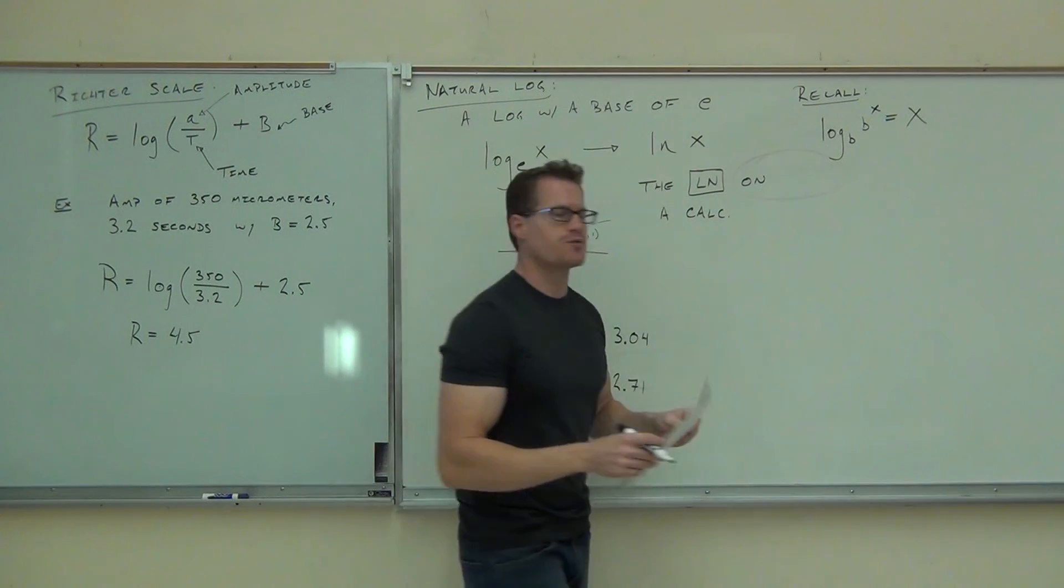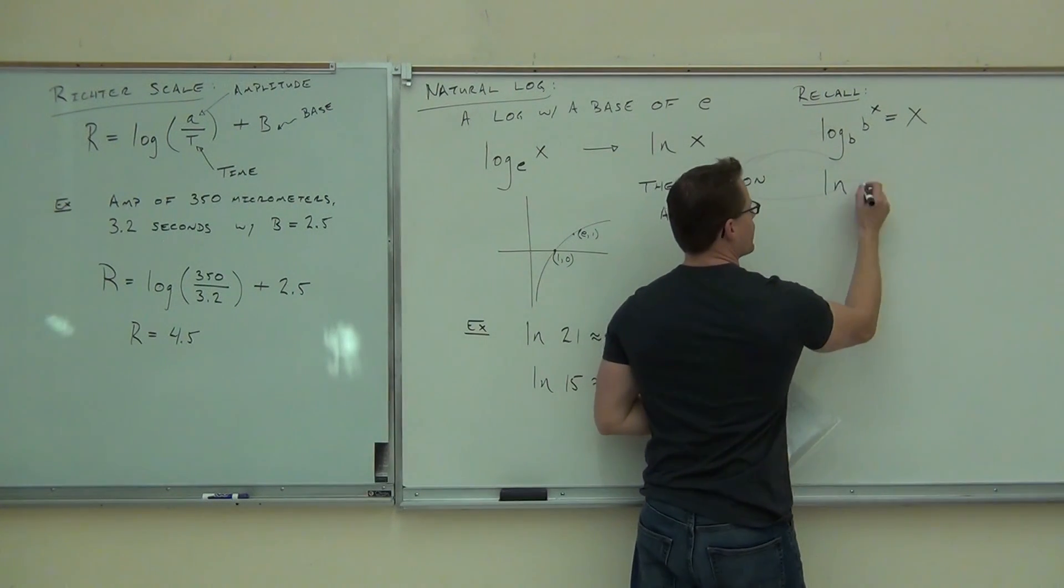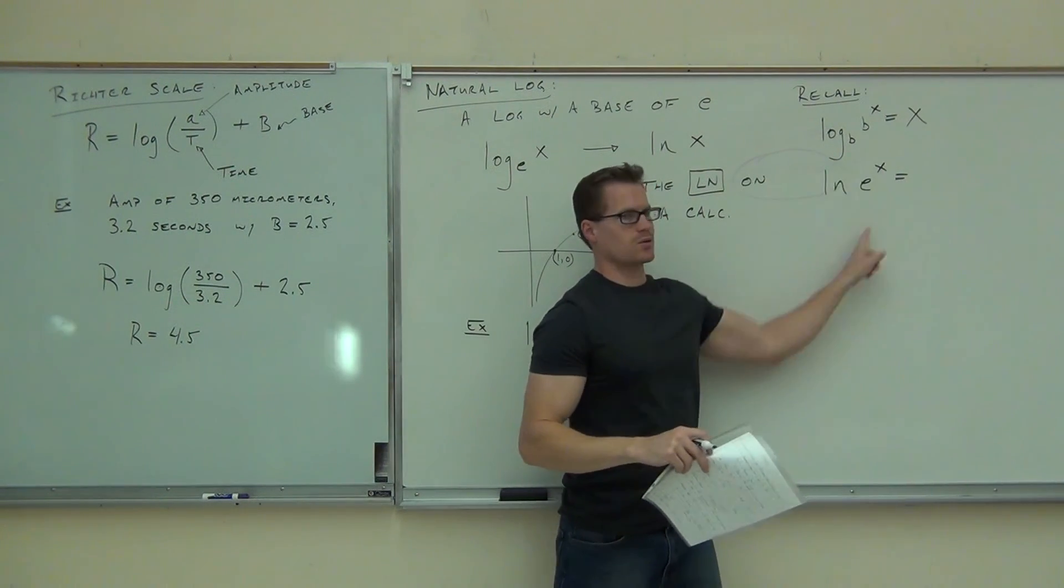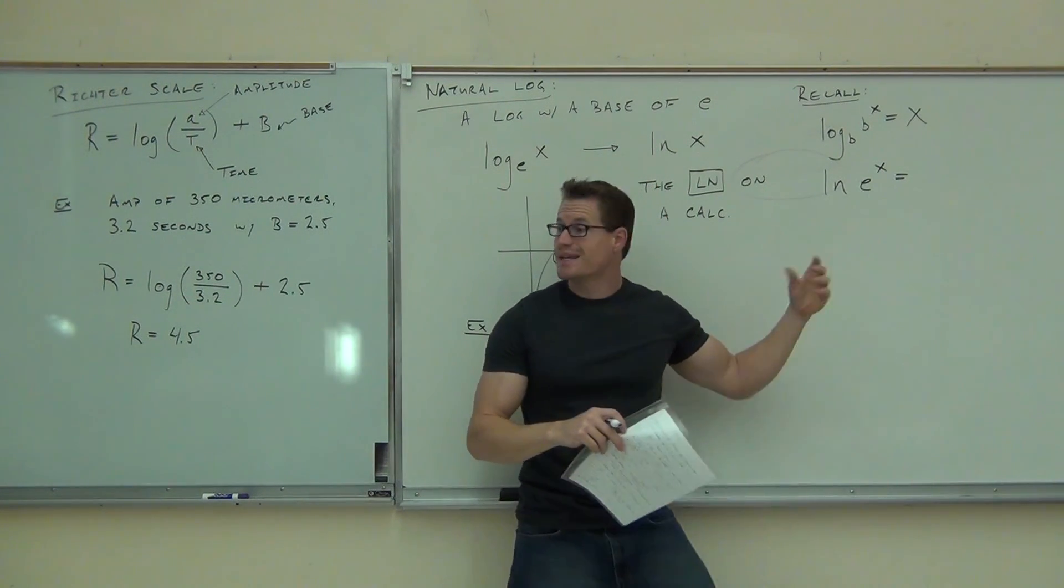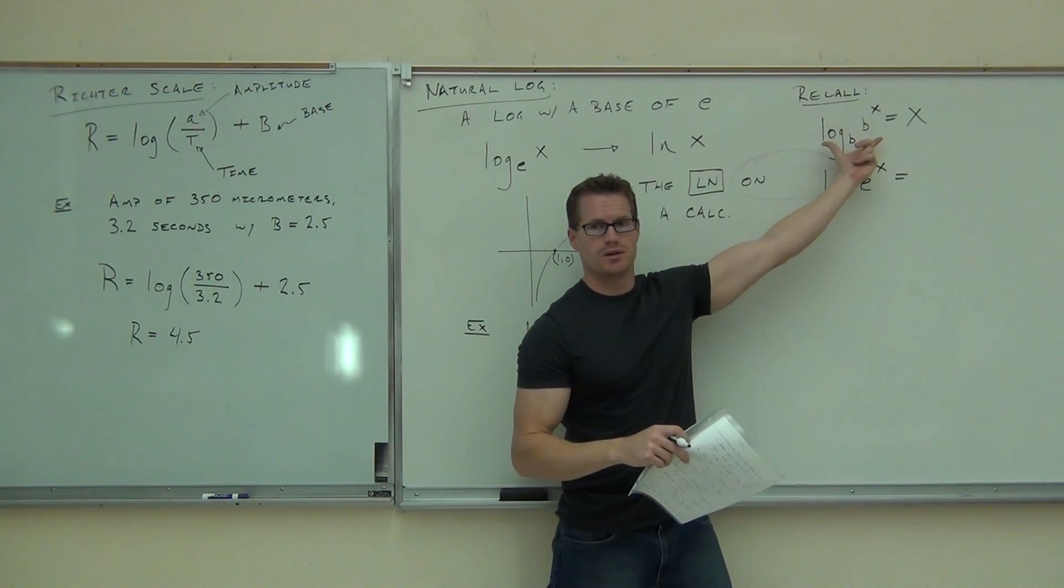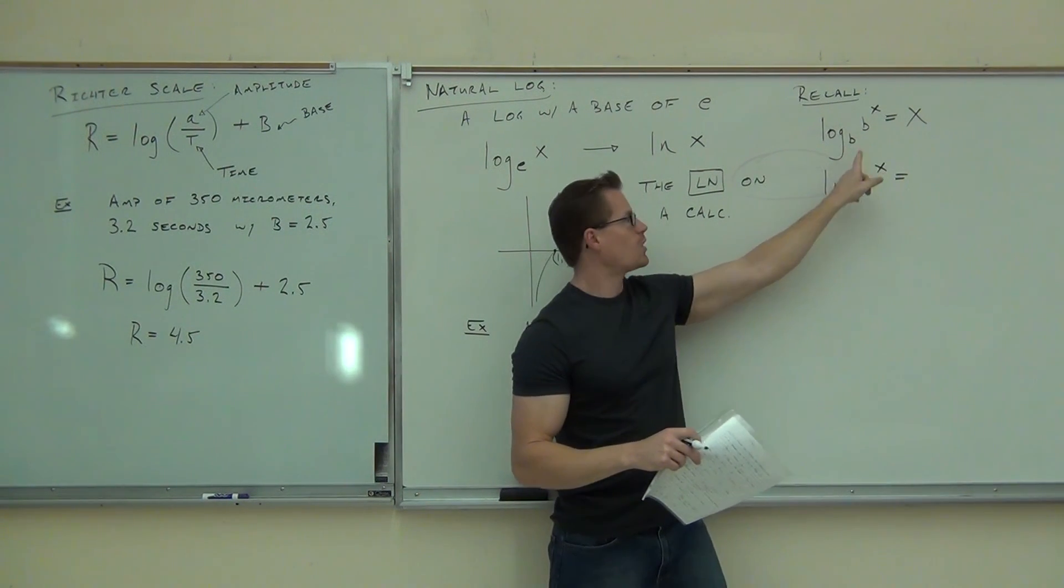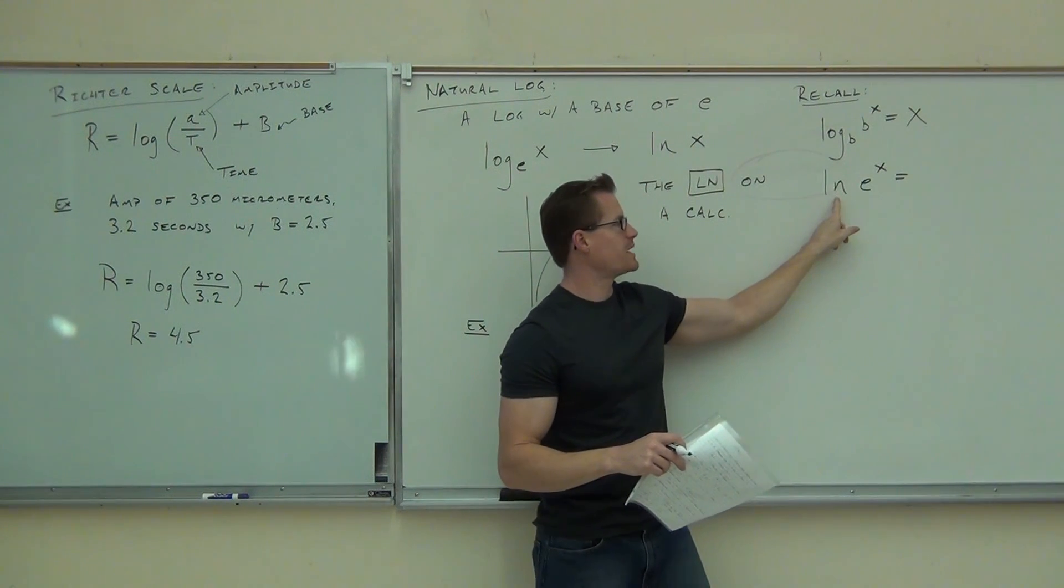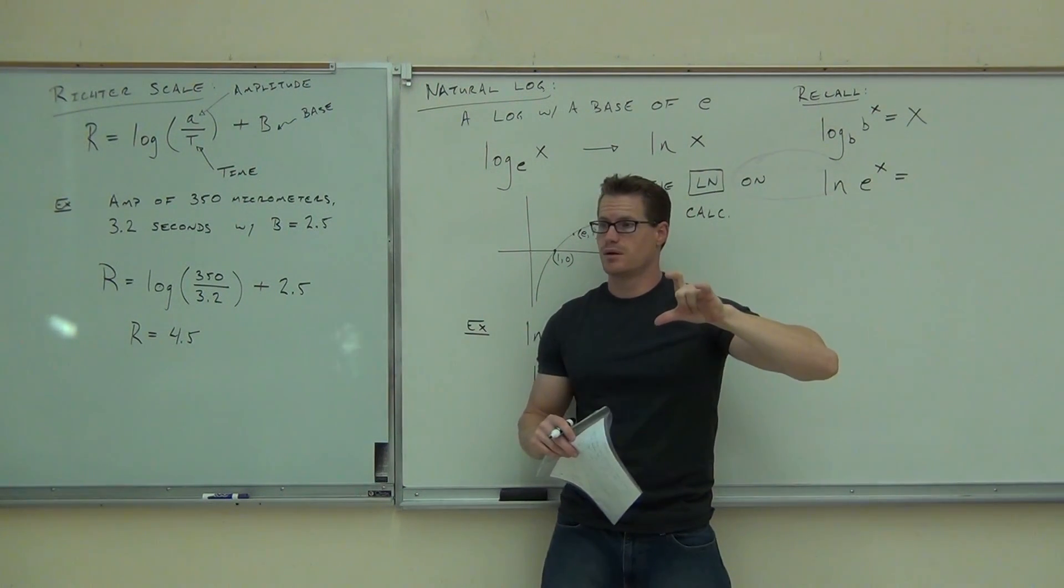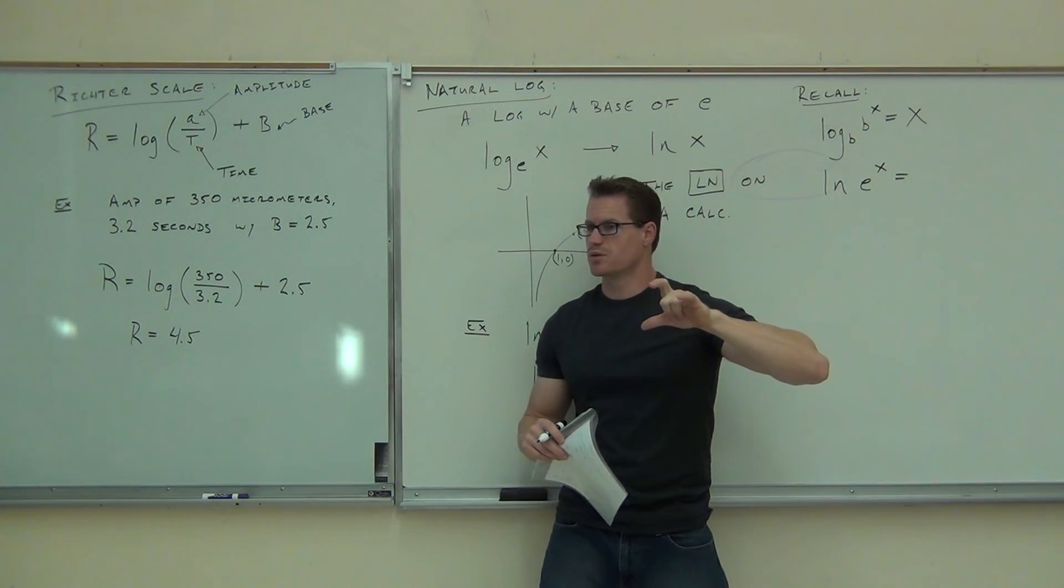Here's what it comes down to for logarithms. What if I have LN of E to the X? My question is, what is my base here? E. Do you guys see that this situation is this situation? Do you see that? This is log base B of B to the X. This is log base E of E to the X. Are the bases the same? Yep. So what's going to happen here? What's your value?